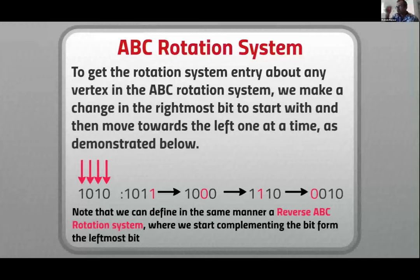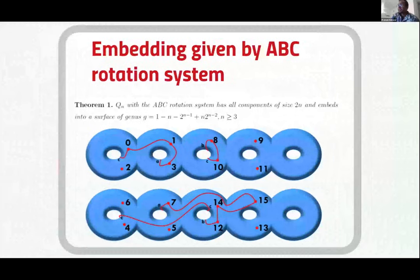We can also define something called the Reverse Alternate Bit Change Rotation System, where instead of complementing from the right, we start complementing from the leftmost bit. The ABC rotation system gives a nice embedding with all components of size 2N. That's why the previous example, we got a bunch of hexagons for Q3, 2N equals six sides.